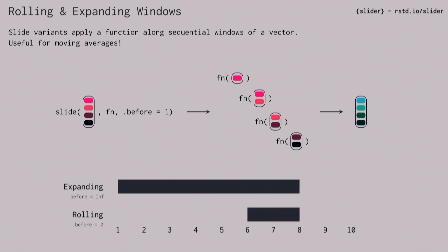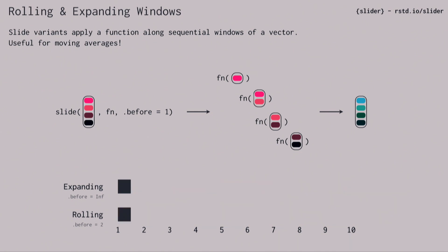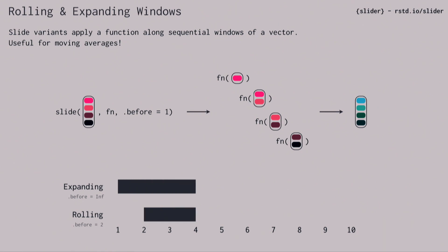With the expanding window, you can do things such as cumulative sums or other different types of expanding ones. For that, you set before equals to infinity, which says give me the current element plus everything before.